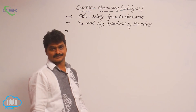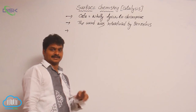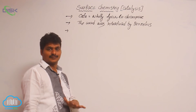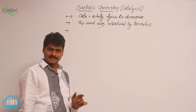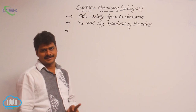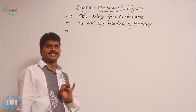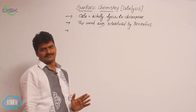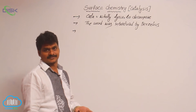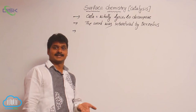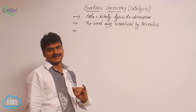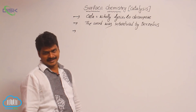A catalyst is a substance which alters the rate of a chemical reaction to which it is added, without itself being consumed in the reaction. That means it does not disappear or get consumed in the reaction, but it changes the rate of the reaction.